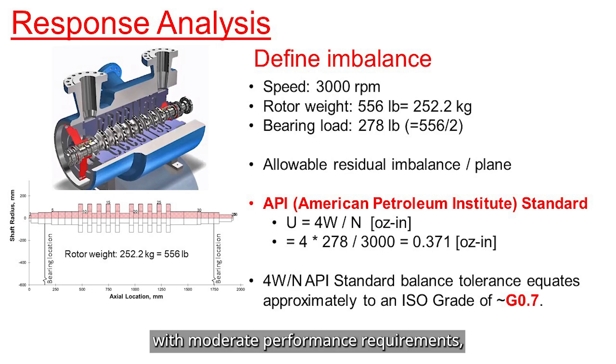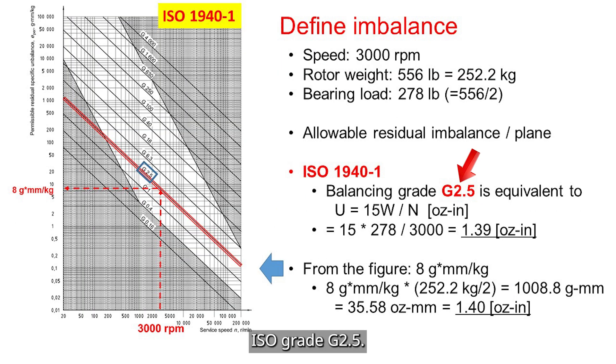API standard balance spec equates approximately to an ISO balance grade G0.7. For machines with moderate performance requirements, some companies opt for ISO grade G2.5. The corresponding imbalance limit is determined using 15 times the rotor weight divided by the rotor speed.